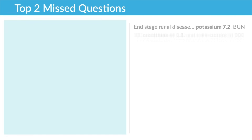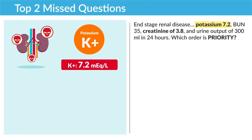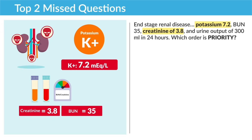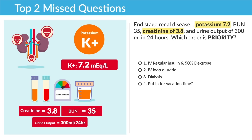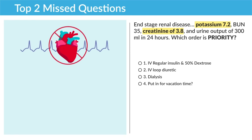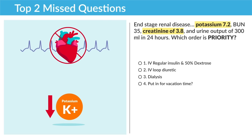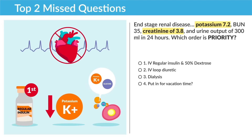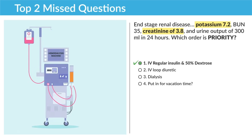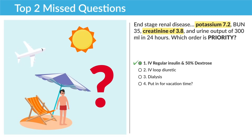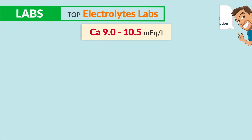NCLEX question two: end-stage renal disease with potassium 7.2, BUN 35, creatinine 38, and urinary output of 300 mL in 24 hours — which order is priority? High potassium is present but there's nothing about EKG dysrhythmias, so we need to lower potassium first with insulin. Answer: IV regular insulin and 50% dextrose — not loop diuretics, not dialysis.